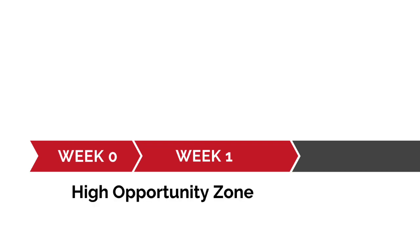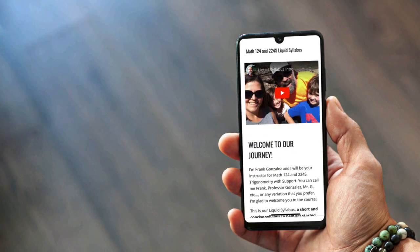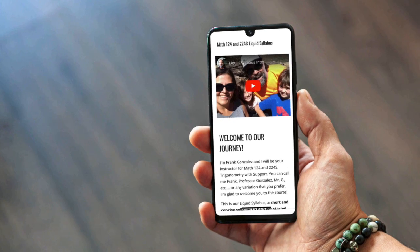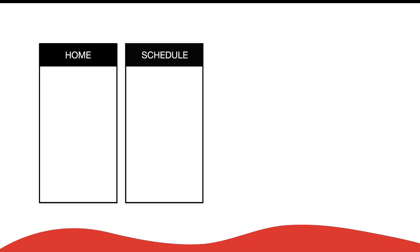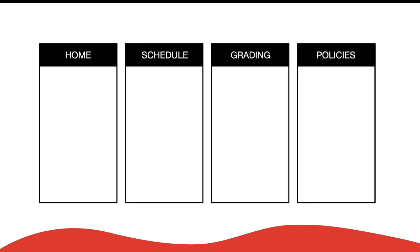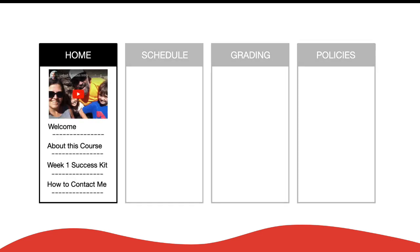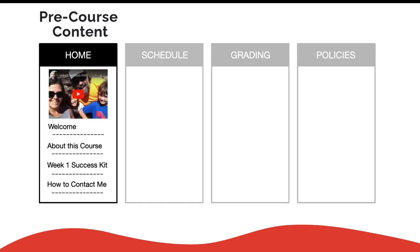Weeks 0 and 1 of a class are a high opportunity zone for fostering a sense of belonging. The liquid syllabus supports your students by providing a welcoming first step before your class even starts. Unlike a traditional syllabus, a liquid syllabus is a public web page that is mobile responsive and contains verbal and nonverbal cues that are essential to establishing trust. While you may want your liquid syllabus to contain multiple pages, focus first on developing a single page that prepares students for week 1 and send it to them in an email before your class begins.